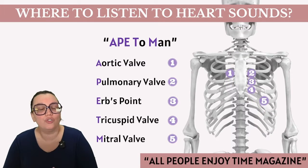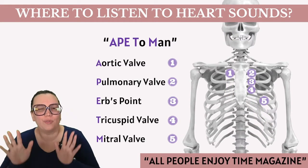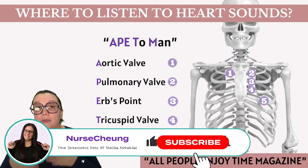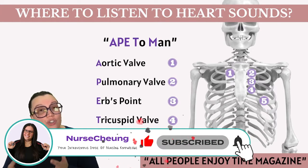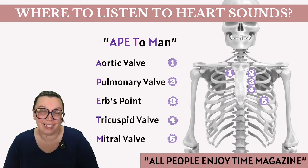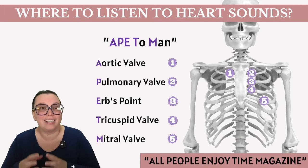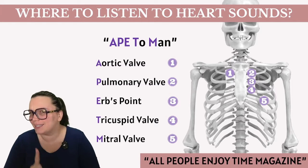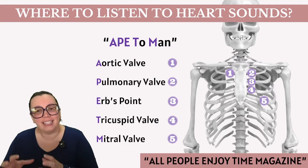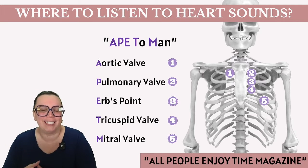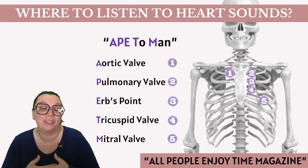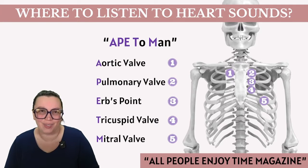When we listen to heart sounds, we do so by positioning our stethoscope over five key areas corresponding to heart valves. To simplify remembering these locations, we use the mnemonic 'Ape to Man' or 'All People Enjoy Time Magazine.' Each initial letter represents a valve location, with the exception of 'Enjoy,' which points to Erb's Point — a midpoint between the heart's base and apex, but with no valves present.